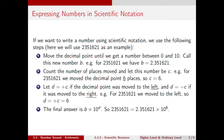The final answer in scientific notation is written down as B times 10 to the power of D. So 2,351,621 is equal to 2.351621 times 10 to the power of 6, where the 6 was found using steps 2 and 3.